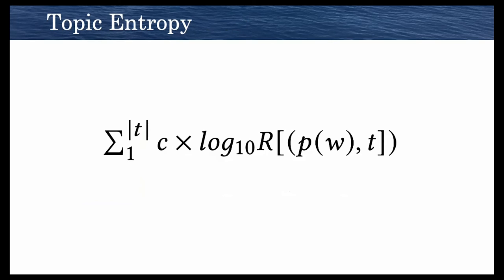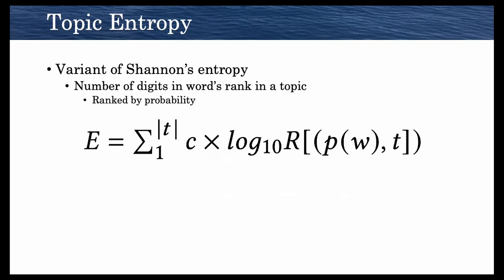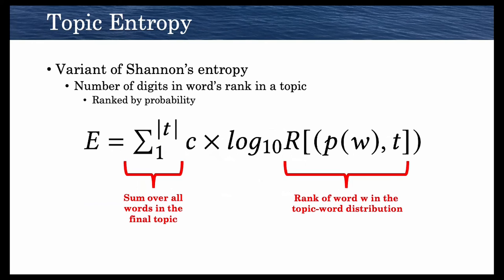Now let's look at topic entropy. Topic entropy is a variant of Shannon's entropy, where we look at the number of digits in a word's rank in a topic, ranked by probability. We want to see how well each topic model is ranking the words that researchers care about in each topic. We have here the rank of word w, you can see it's log base 10, and we're just summing over all the words in that final topic. The higher the score is, the worse off we are.